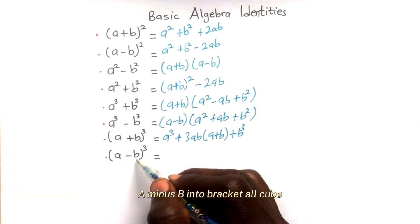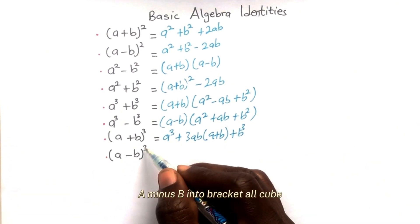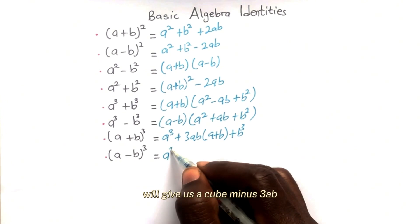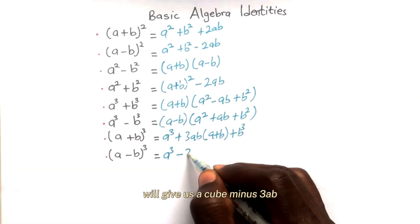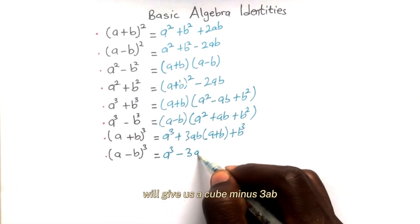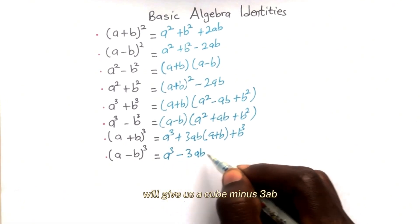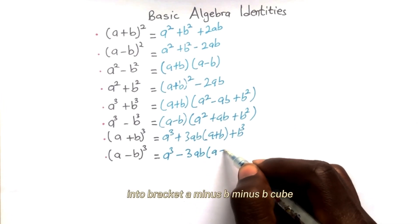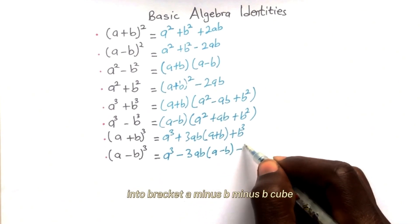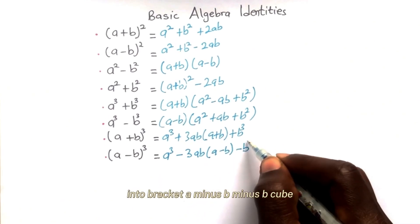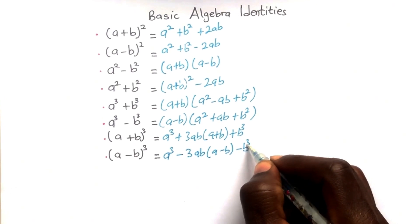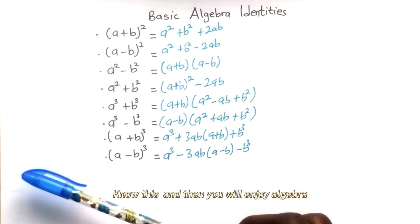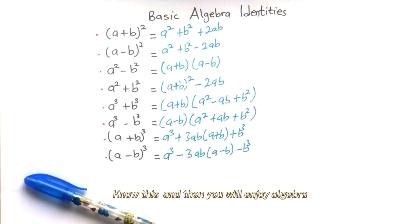(a minus b) cubed equals a cubed minus 3ab into (a minus b) minus b cubed. And then you will enjoy algebra.